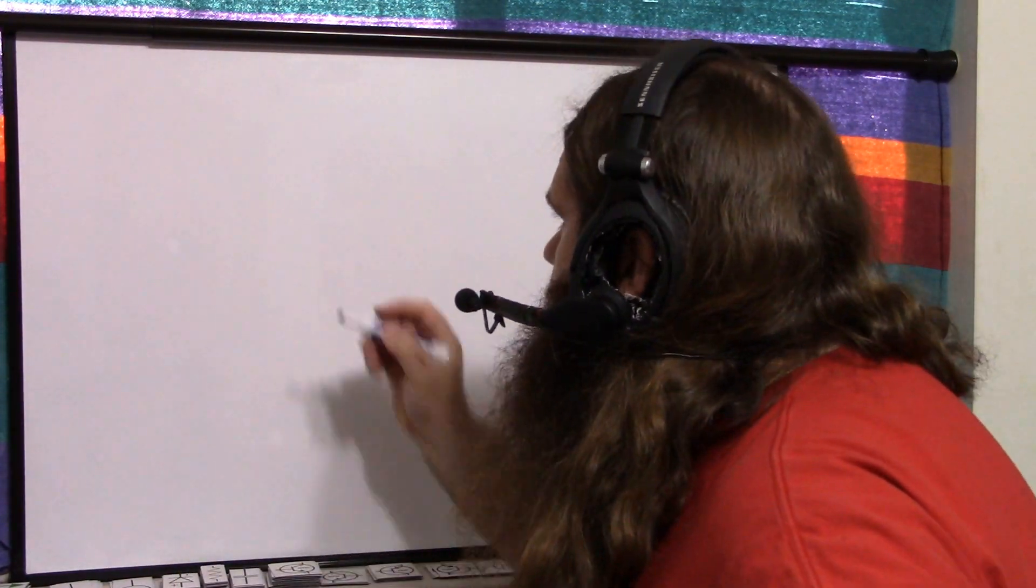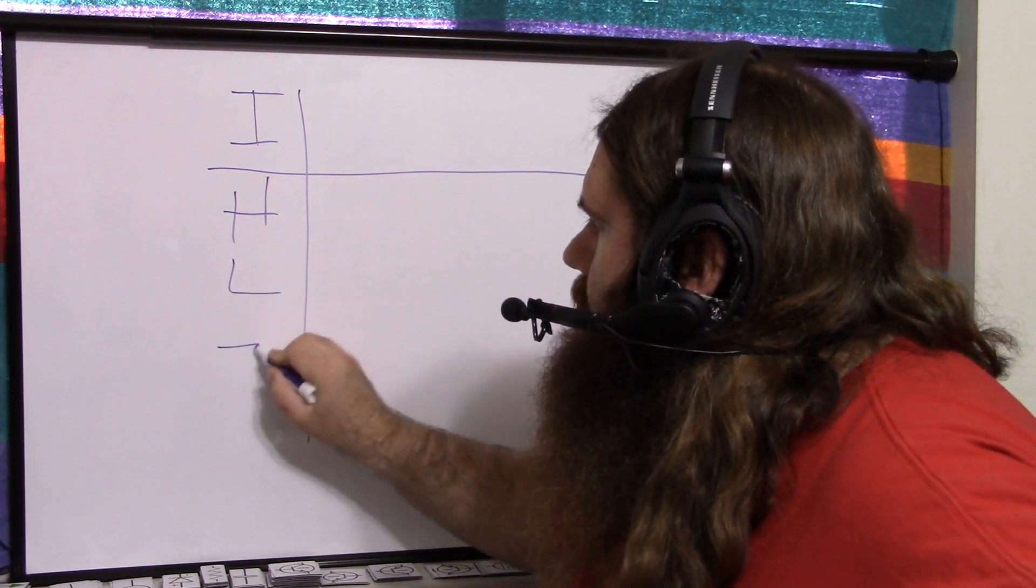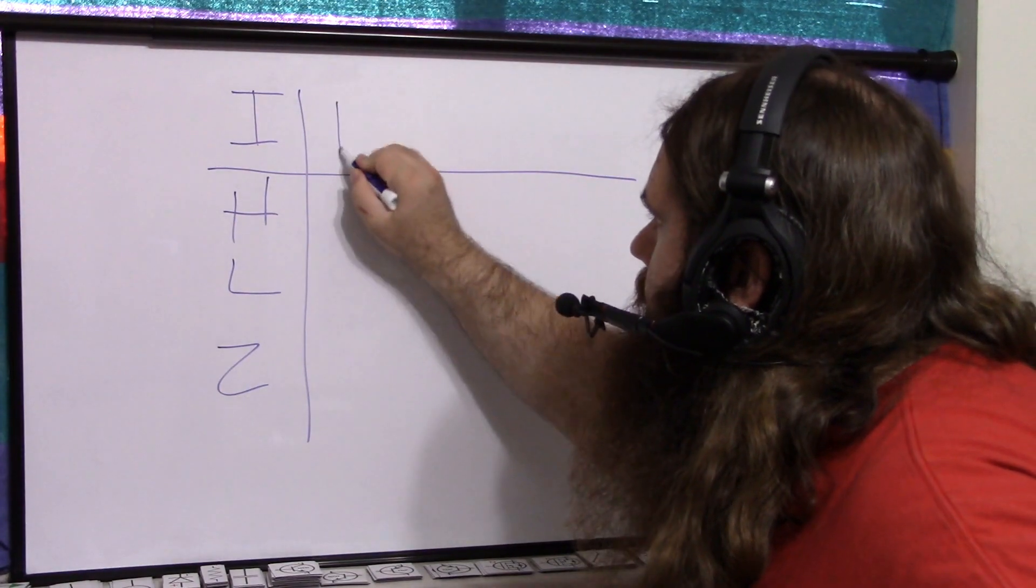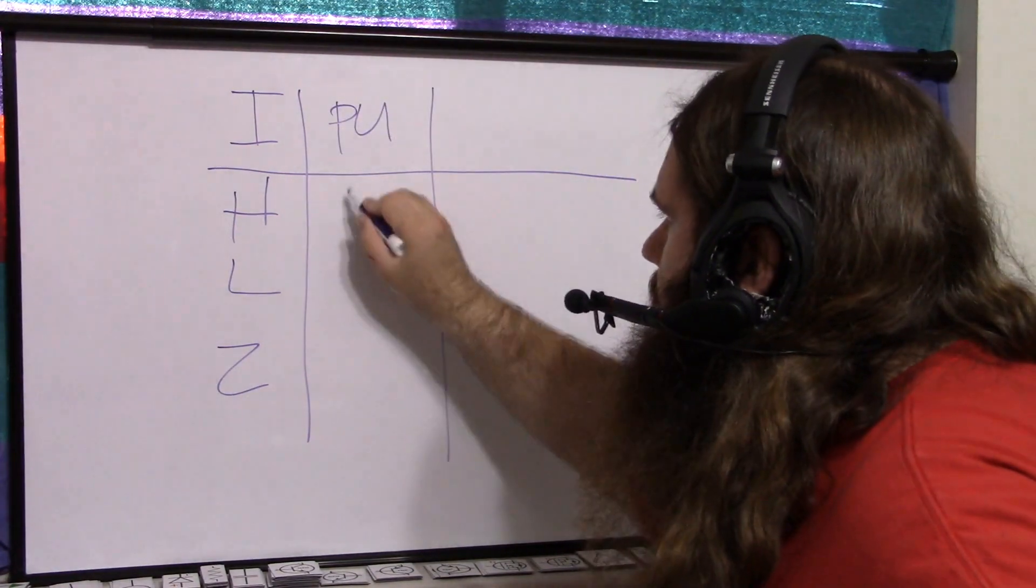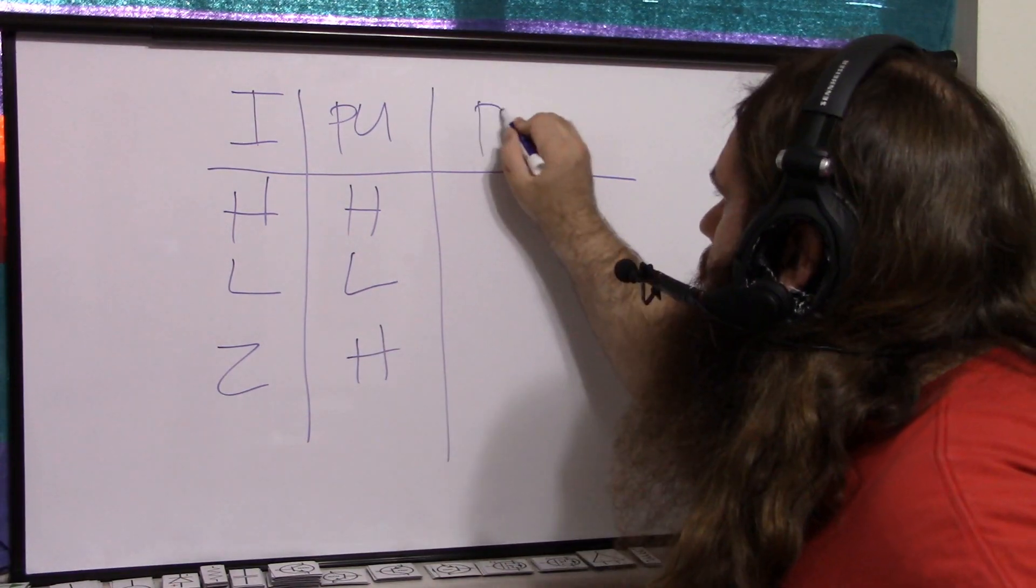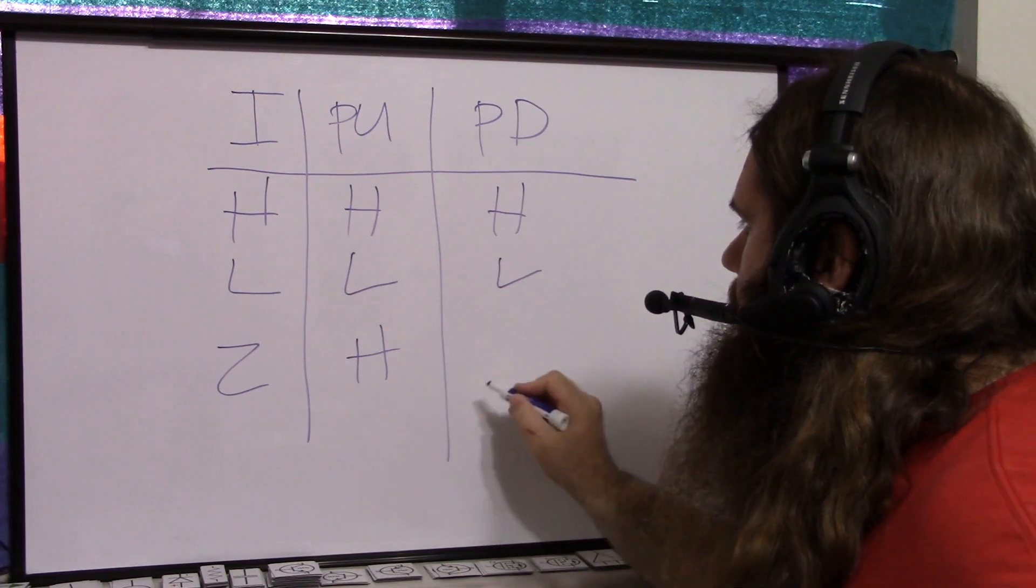So think about this as a truth table. You have your input. Your input could be a high signal, a low signal, or high impedance, which we say Z. High Z. If you use a pull up resistor, high is high, low is low, and high impedance floating is high. If you use a pull down resistor, high is high, low is low, but high impedance is low.